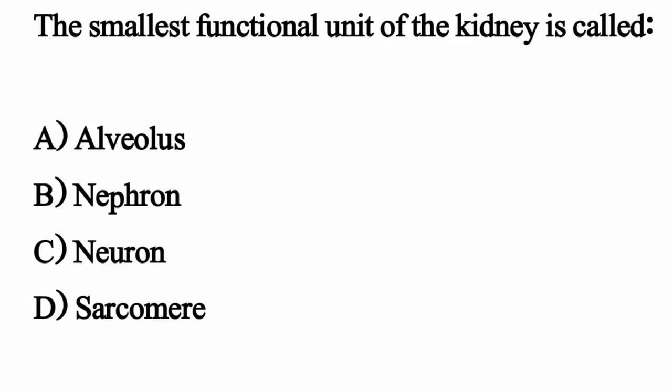The smallest functional unit of the kidney is called? The correct option is option B: Nephron.